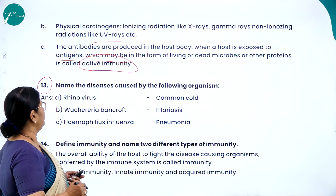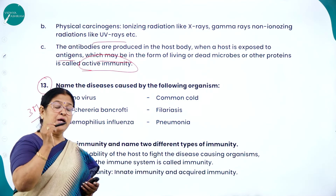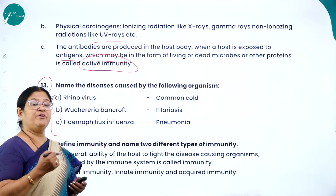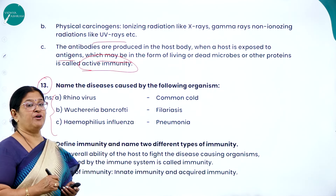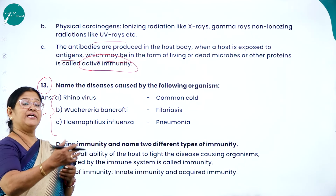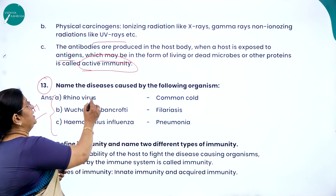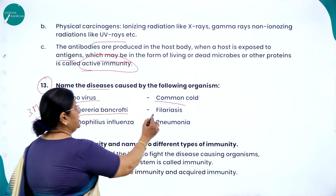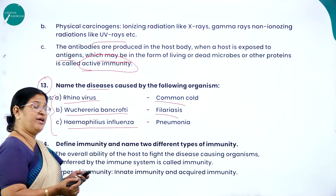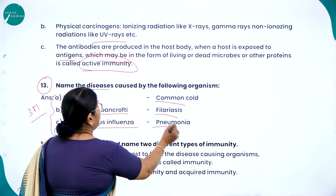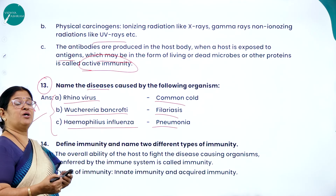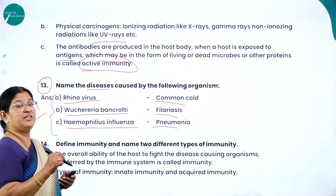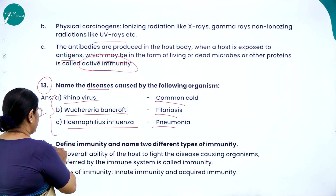Question 13: name the disease caused by the following organisms — this is a three-mark split question. Such split questions are very easy to answer and scoring. The answers: rhinovirus causes common cold; Wuchereria bancrofti causes filariasis or elephantiasis; Haemophilus influenzae or Streptococcus pneumoniae causes pneumonia. Split questions save time and are easy to score compared to descriptive essay-type questions.